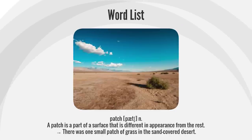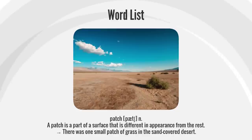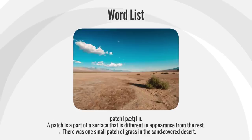Patch. A patch is a part of a surface that is different in appearance from the rest. There was one small patch of grass in the sand-covered desert.